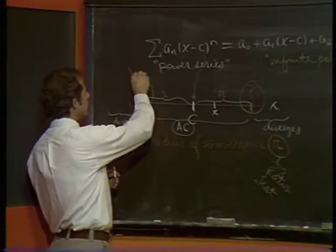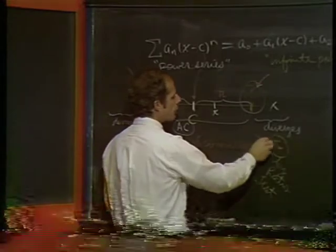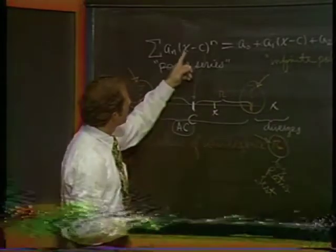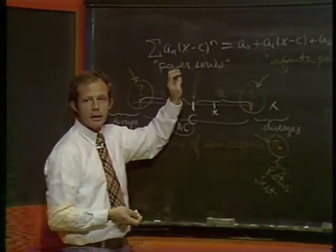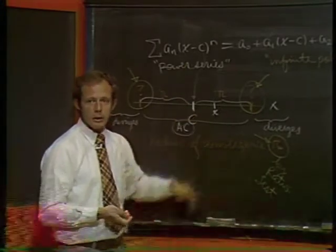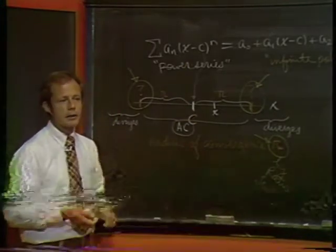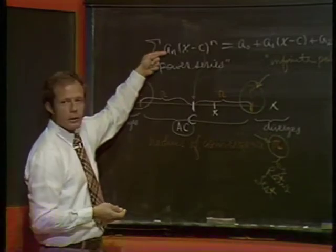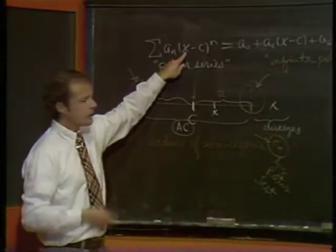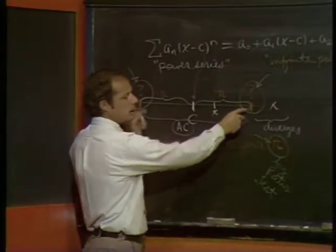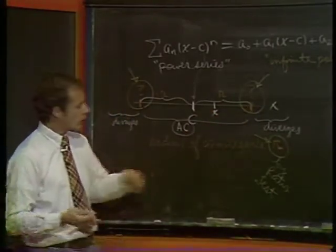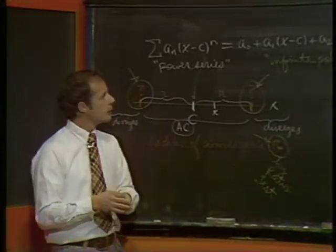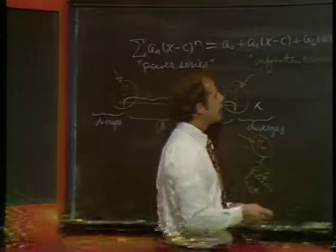These end points are pretty much like all the previous problems you've had. You take that specific number, put it into your power series, you've got a series of constants. Does that series converge or not? That's when you use your integral tests, your alternating series tests, et cetera. The big question is, where does the series converge? This stuff says you only have to check the end points once you've figured out what the interval is. That's basically a review from last time.